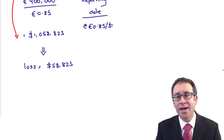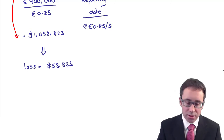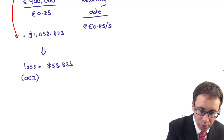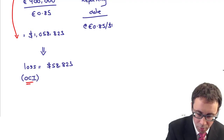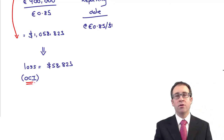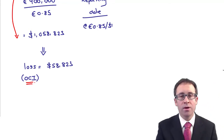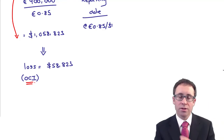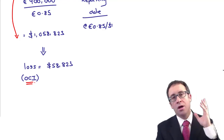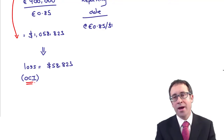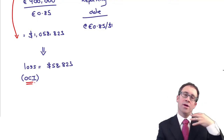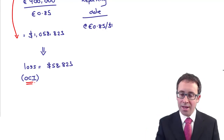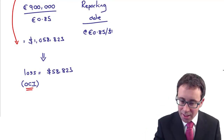Because this is a hedging instrument, that loss should go through OCI. This is the important aspect — if it were just a normal loan denominated in a foreign currency, the gains and losses would go to profit or loss per IAS 21: translate at the closing rate, and gains and losses go to profit or loss.